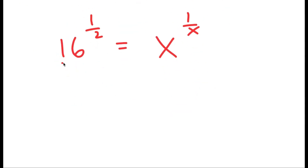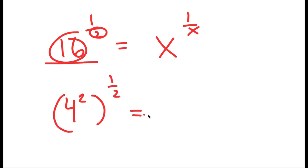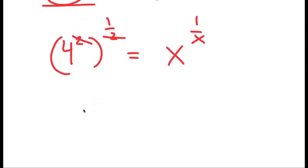Now my goal is to turn the left side to be in the form some number to the power of 1 over that same number, so we can make that number our solution. Right now, 16 and 2 have to turn into the same number. Since 16 is the same thing as 4 squared, I rewrite it as 4 squared to the power of 1 half, which gives 4 to the power of 1. So I'm left with 4 is equal to x to the power of 1 over x.